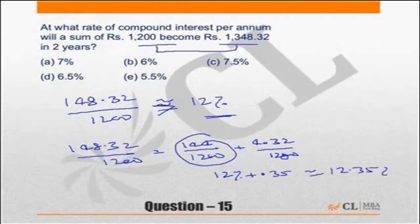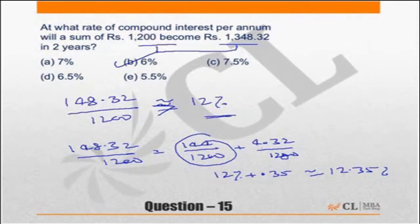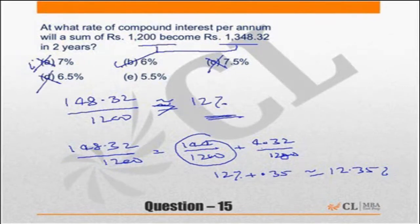The correct answer should be 6 percent. Check the choices — I know the overall interest for 2 years on compounding is slightly more than 12 percent. Two successive increments of which choice gives 12-point-something percent? The only answer is 6. Choice A (7%) gives 14.49 percent, which is more than 15 percent. The correct choice is B — 6 percent.